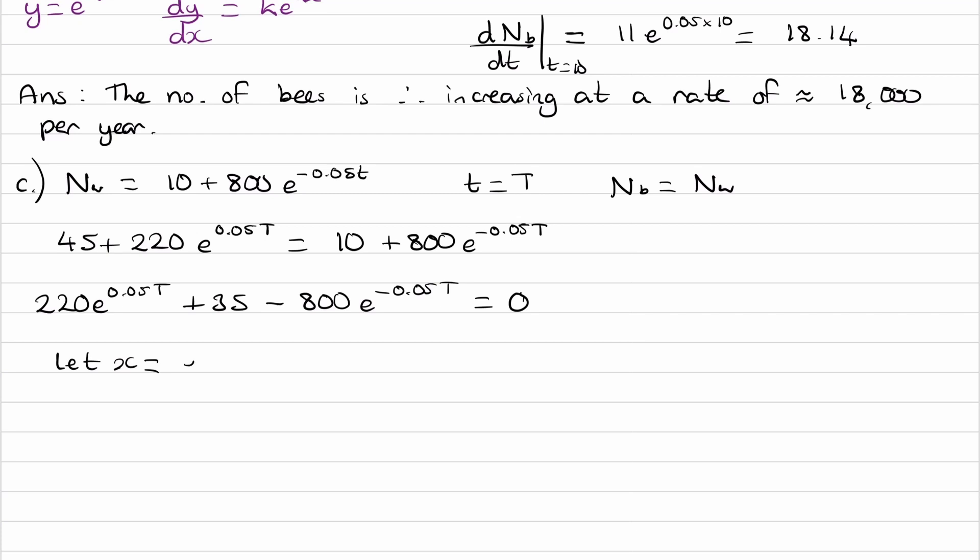So if you weren't sure, you would be setting x to be e to the power of 0.05T. So it becomes 220x plus 35 minus 800 x to the minus 1. And the reason that's x to the minus 1 is because if we do both sides of this equation to the power of minus 1, we would times this power by minus 1, and it becomes minus 0.05 capital T.